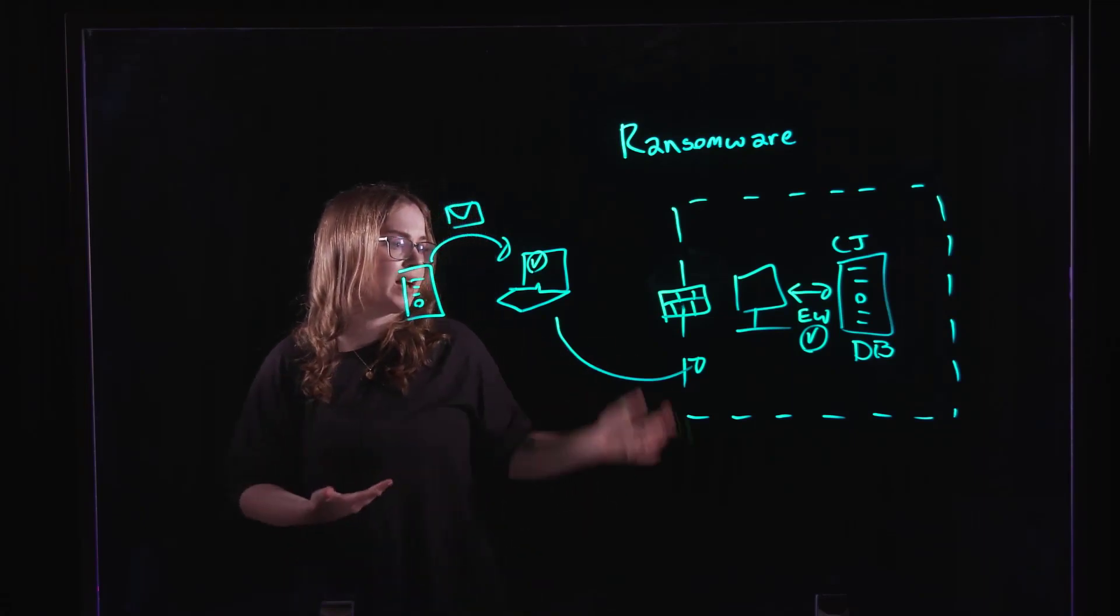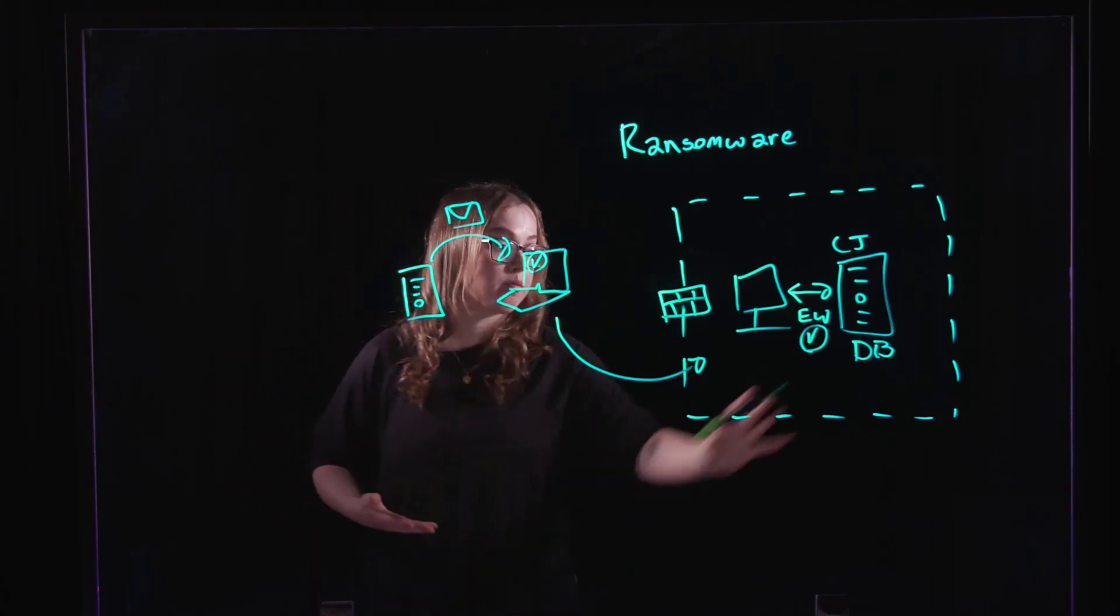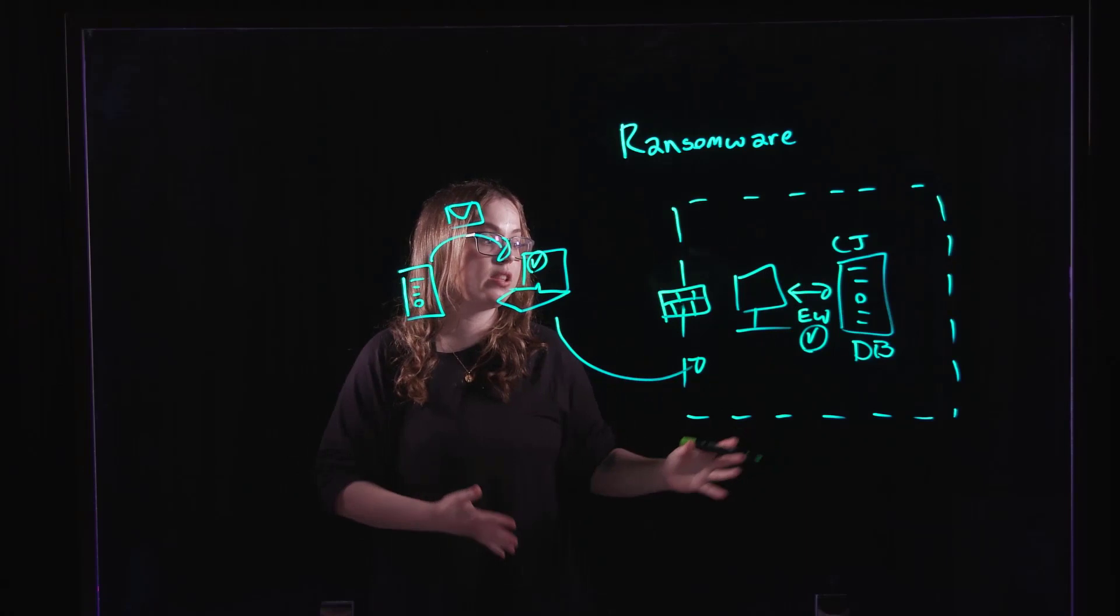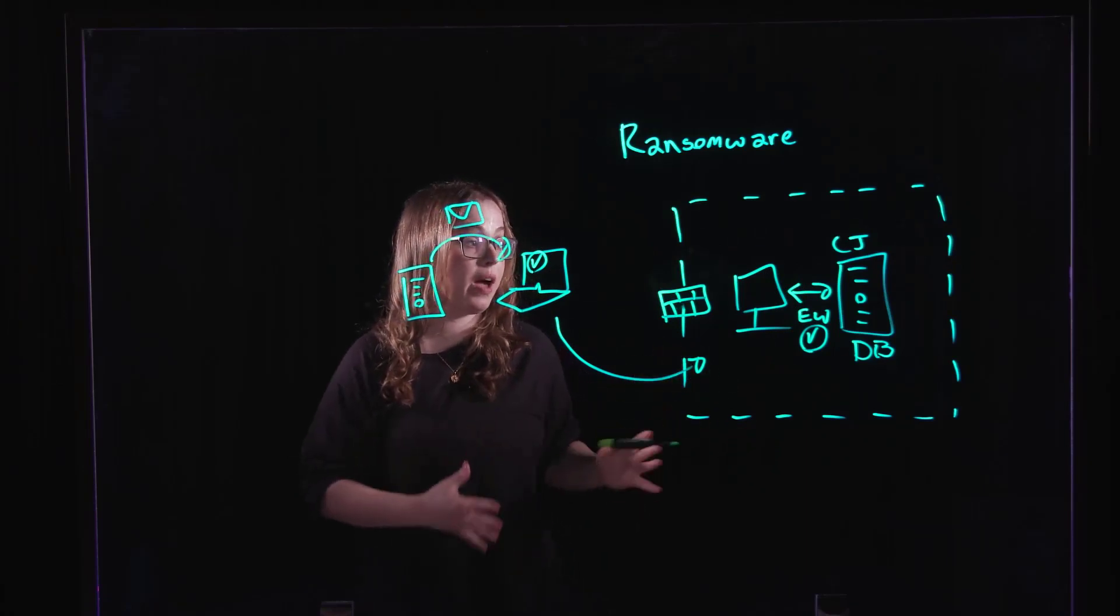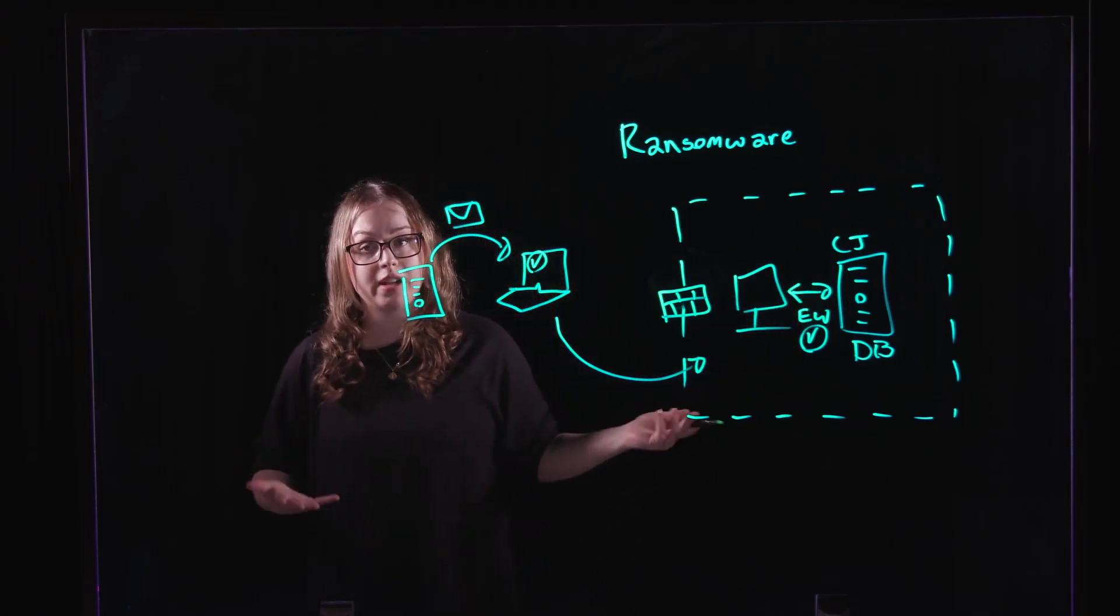So again, let's imagine here that we haven't prevented during that initial phase where they are trying to get access. We haven't prevented when they're trying to move laterally to that high target value endpoint and we're at the point where they've reached our crown jewels and they're going to encrypt our data.